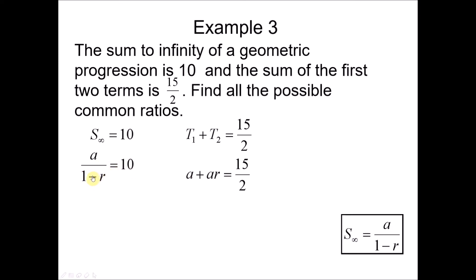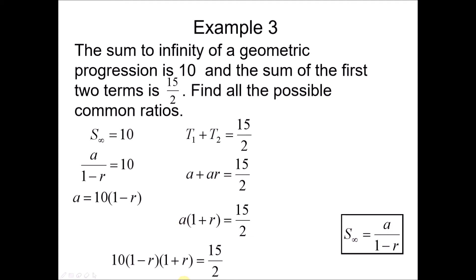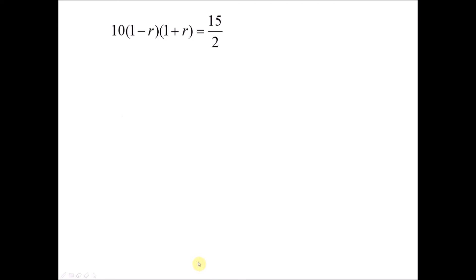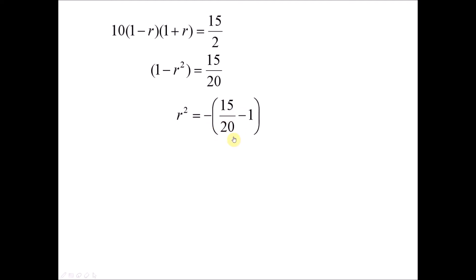Simplifying the first equation, we bring (1 - r) to the right-hand side to get a = 10(1 - r). Factorizing the second equation gives a(1 + r) = 15/2. Substituting a = 10(1 - r) into the second equation: 10(1 - r)(1 + r) = 15/2. Solving, we get r² = 1/4. Taking the square root gives r = 1/2 or r = -1/2. So there are two possible values for r.